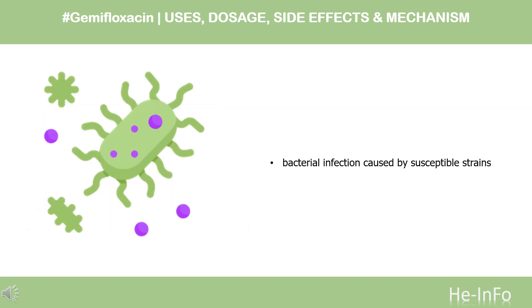What is Gemifloxacin used for? For the treatment of bacterial infection caused by susceptible strains such as S. pneumoniae, H. influenzae, H. parainfluenzae, or M. catarrhalis, S. pneumoniae including multi-drug-resistant strains (MDRSP), M. pneumoniae, C. pneumoniae, or K. pneumoniae.